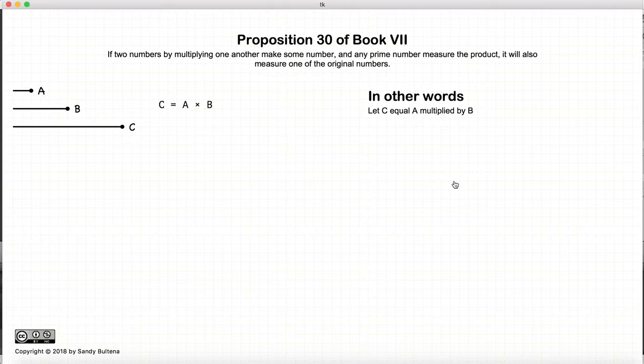In this proposition, we have one number that is equal to the multiplication of two other numbers. So we have two numbers, A and B, and C is the product of A and B.